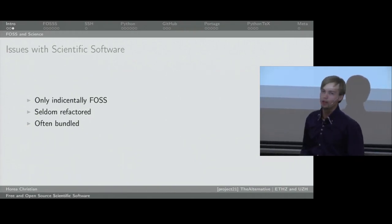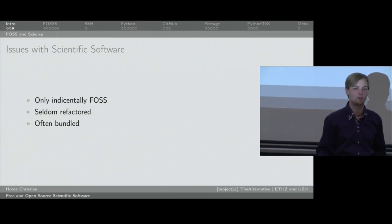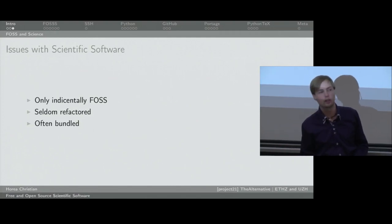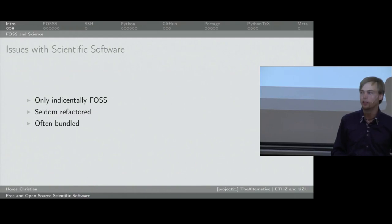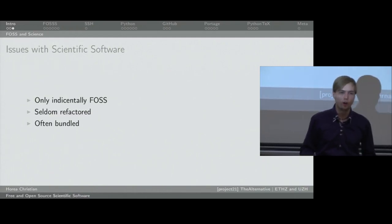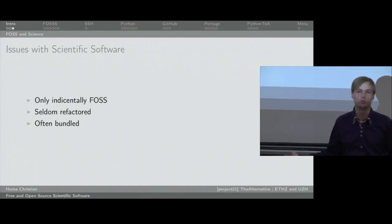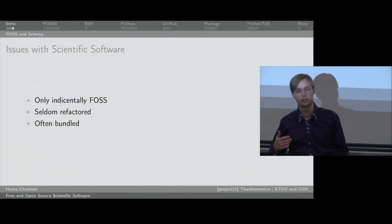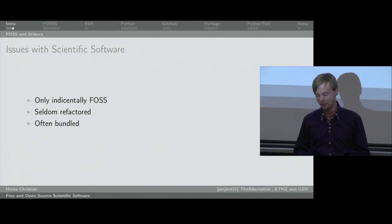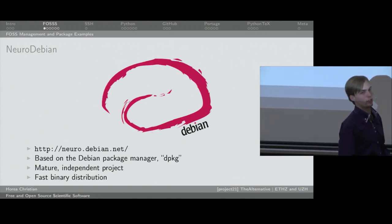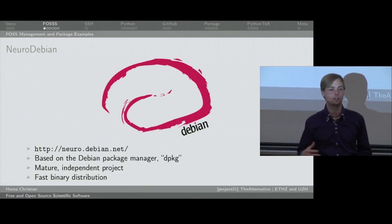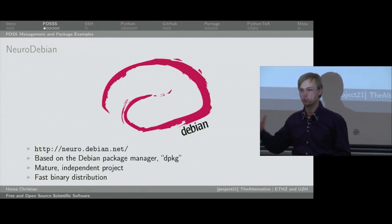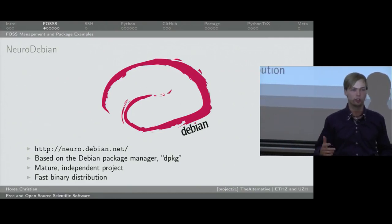Scientific software often comes bundled. If you have lots of publications based on your software, you want people to be able to reproduce that, so backwards compatibility is a big concern. The way this is solved is that most software distributions ship with all the libraries they need, which is the de facto way of installing scientific software. This is bad because it leads to deprecated dependencies bundled with the software, which doesn't use your system backends and is actually quite a big issue all around.